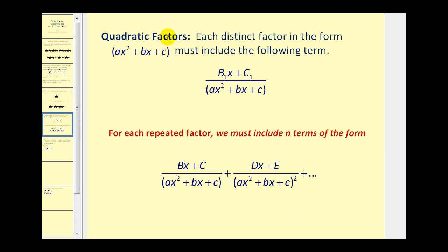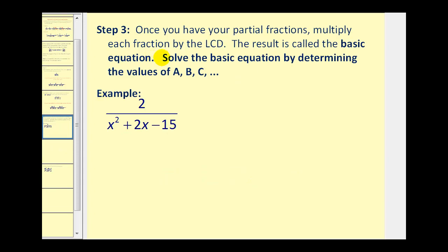And if we have a quadratic factor, notice our numerator is now going to be in the form of Bx plus C. So we have a binomial linear factor over the quadratic factor. And again, if it's repeated, we would have to include additional fractions with different numerators. And then lastly, once we have the partial fractions, we're going to multiply each fraction by the LCD, and the result is called the basic equation.